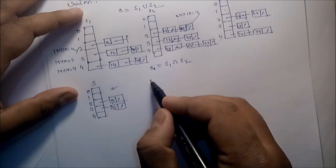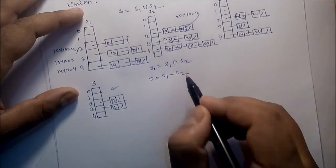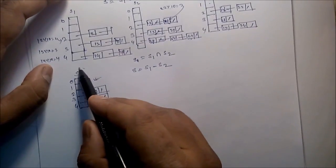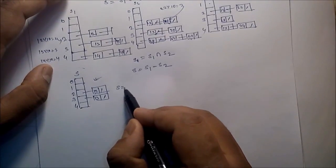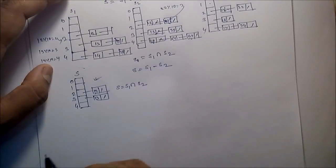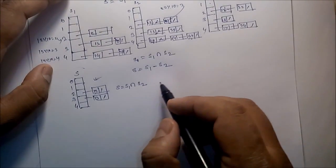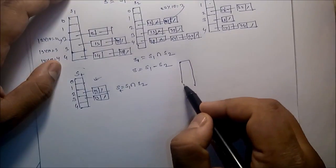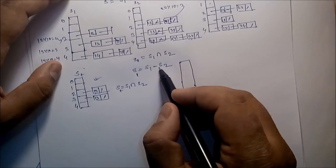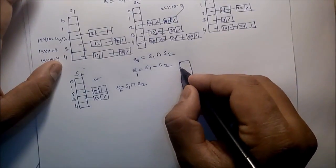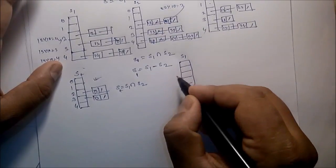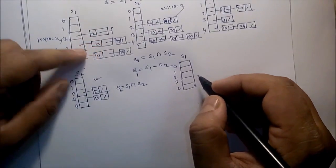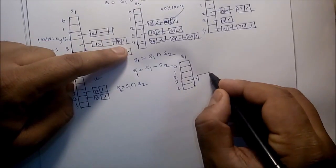Now the difference operation: suppose X is equal to S1 minus S2. First, create the intersection of S1 and S2 and store it in a temporary variable. Then from S1, remove the common elements — remove 12 and remove 13. The remaining data in S1 is only 93.